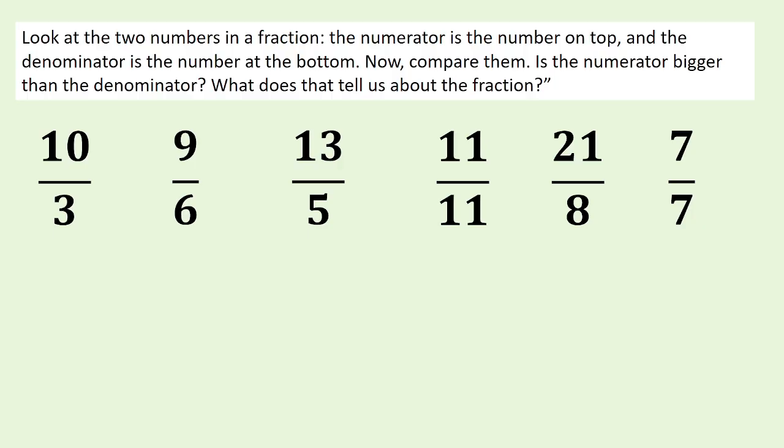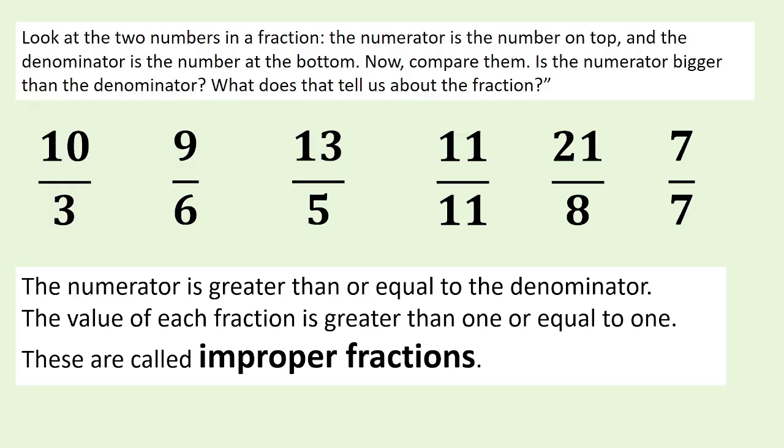Look at the two numbers in a fraction again. The numerator is the number on top and the denominator is the number at the bottom. Compare them — is the numerator bigger than the denominator? The numerator is greater than or equal to the denominator. The value of each fraction is greater than one or equal to one. These are called improper fractions.